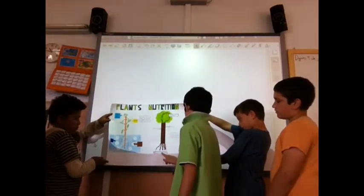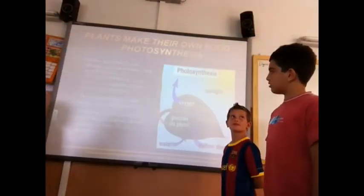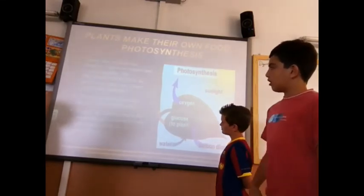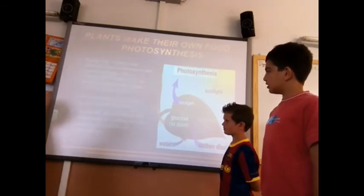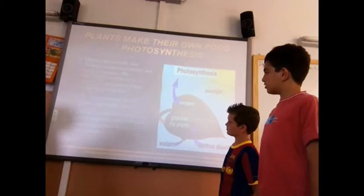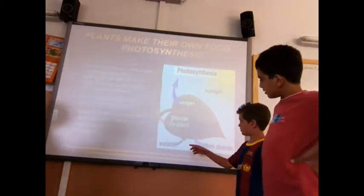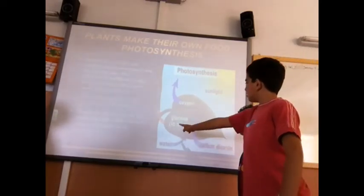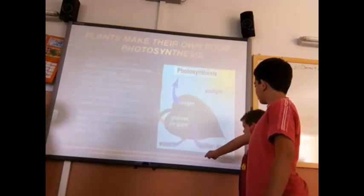Absorption of water and mineral from the floor. Photosynthesis is the process by which the plant makes its food. The chlorophyll gives the green color to the leaves. During photosynthesis, the plants take in carbon dioxide and oxygen. The requirements for photosynthesis are light, water, and carbon dioxide, along with chlorophyll.